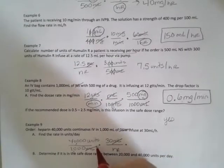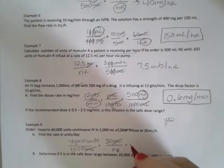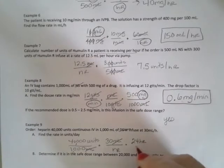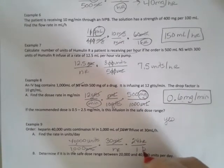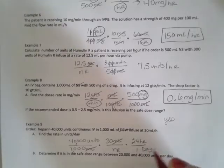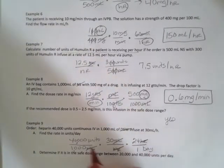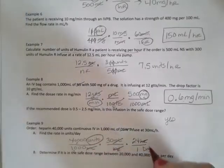They want it in days. So right now I have units per hour. I need units per day. There's 24 hours in one day, so I throw in a conversion factor there. My hours cancel out. I have units per day.